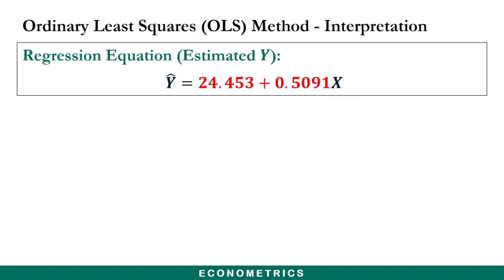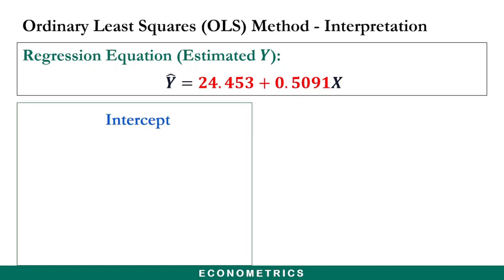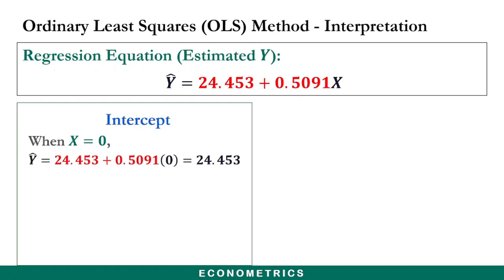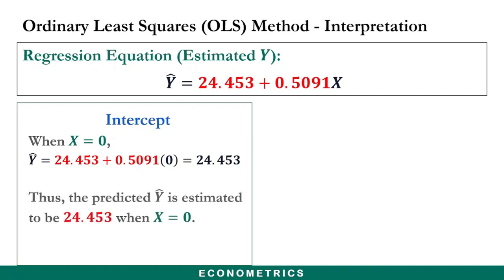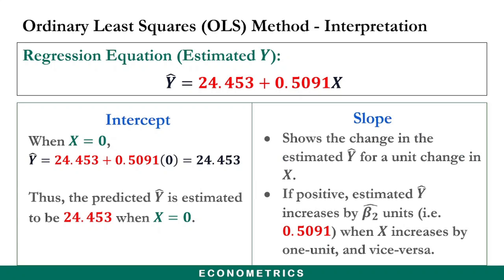Based on this regression equation, we interpret the coefficients as follows. For the intercept: when x equals 0 and we substitute into the regression equation, we get 24.453 — meaning the predicted y is estimated to be 24.453 when x equals 0. For the slope: it shows the change in estimated y for a unit change in x. Since the slope is positive, the estimated y increases by 0.5091 when x increases by one unit.